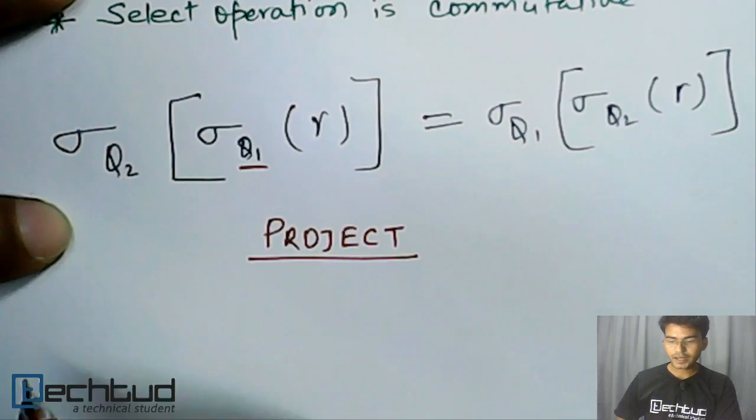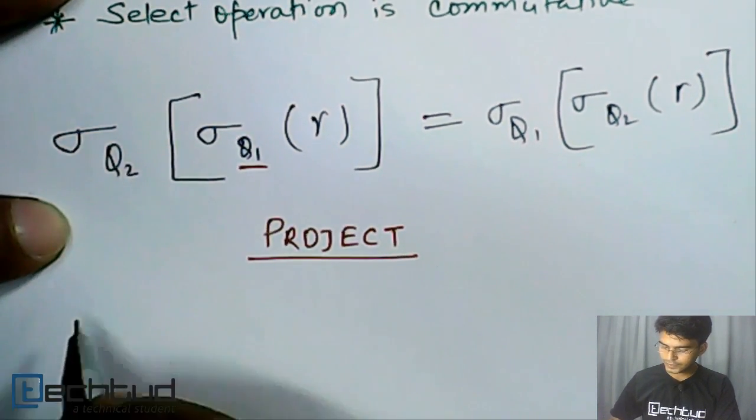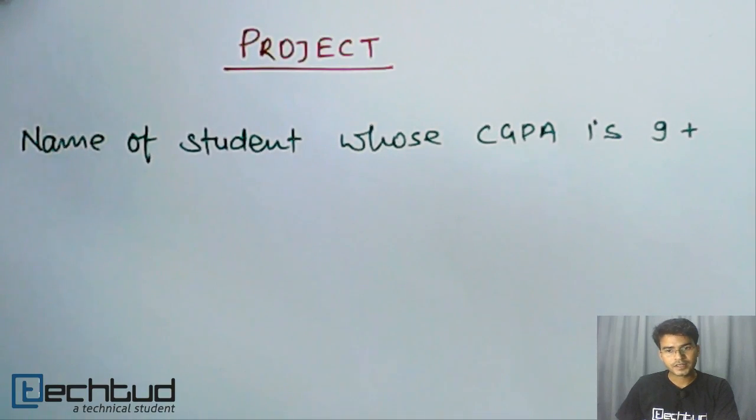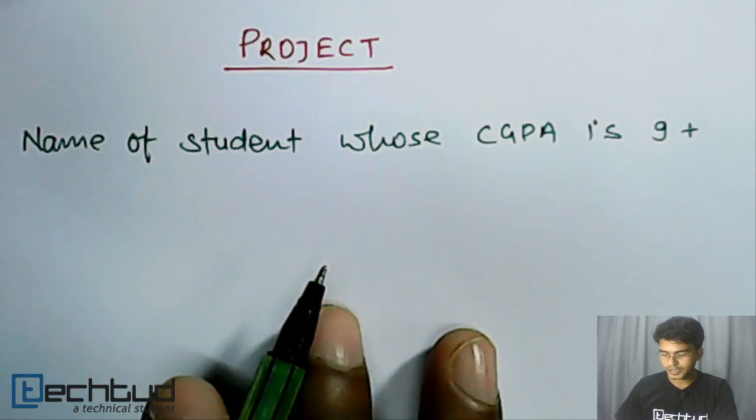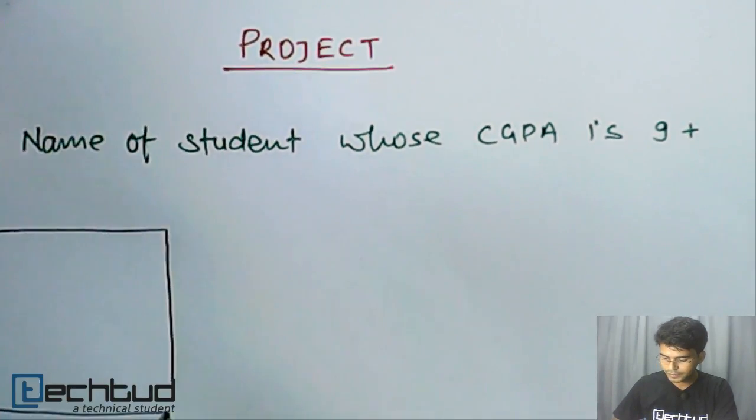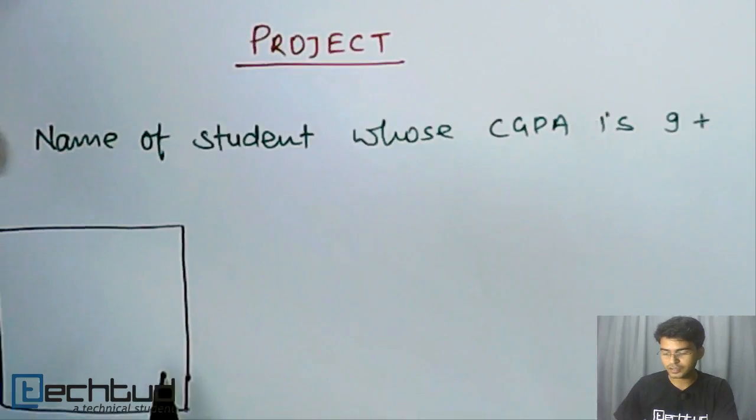Similarly, let's say in this relation, if I am saying that I want the name of students, then let's write the requirement. So now the requirement is a little bit changed. I just want to know the name of students; I don't want all the information. Then in this case we will use project operation.